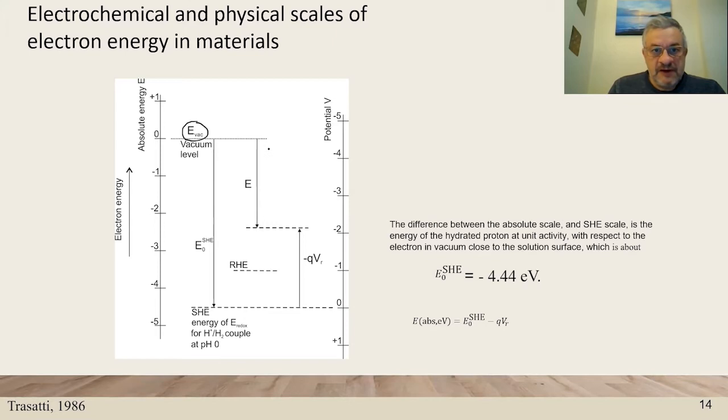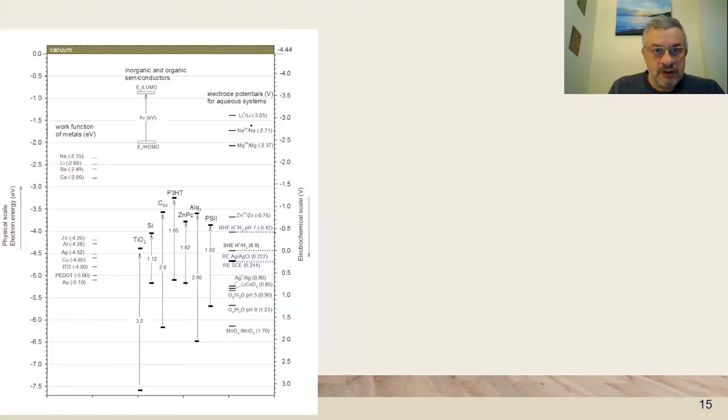The difference between the two scales is the energy of the hydrogen proton so this is minus 4.44 electron volts so that at the right is the electrochemical energy and at the left is the electron energy. The energy of the redox pairs can be put into the electrochemical scale and this can be made in connection to the work functions and to the energy levels of semiconductors in the electronic energy with respect to the vacuum.